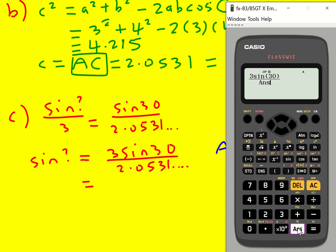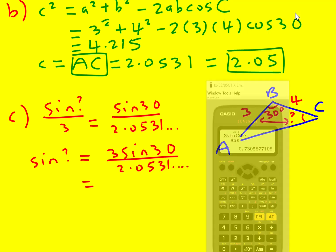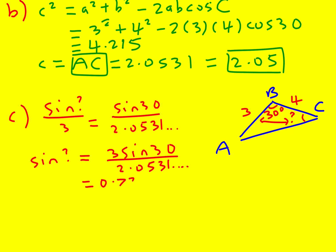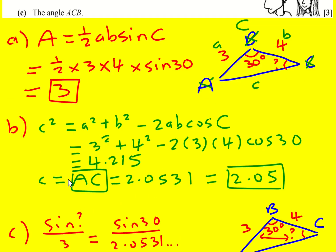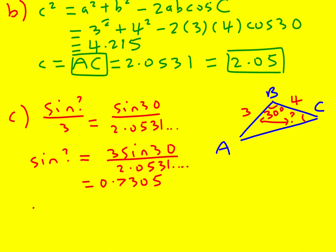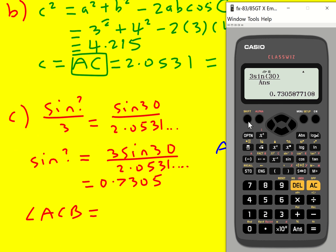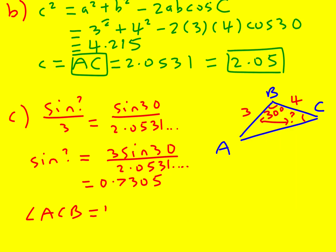Okay, and I've got that stored as the answer. So 0.7305. Therefore angle ACB is going to equal inverse sine of this. We're working in degrees. So we get 46.935, which I'll round to 46.9 degrees.